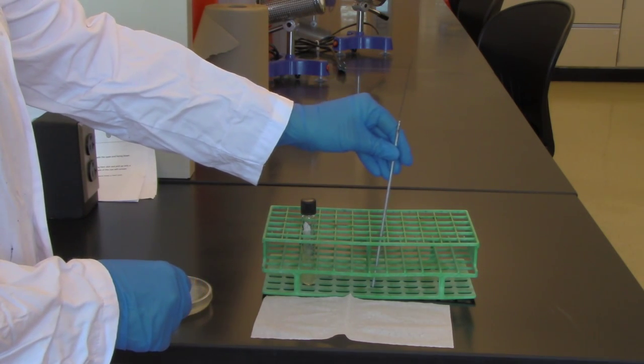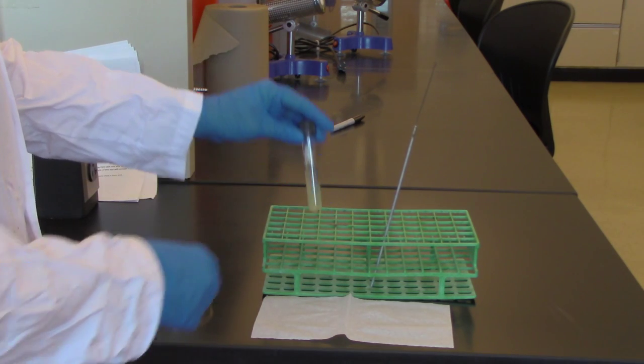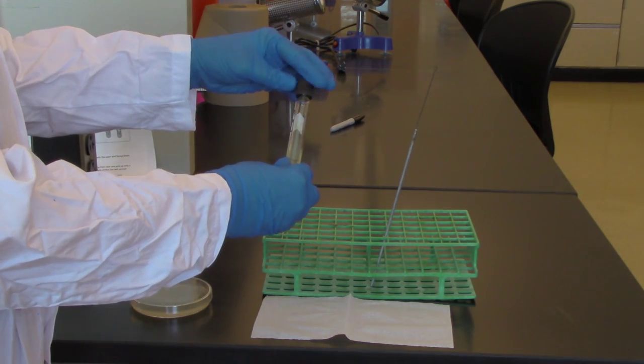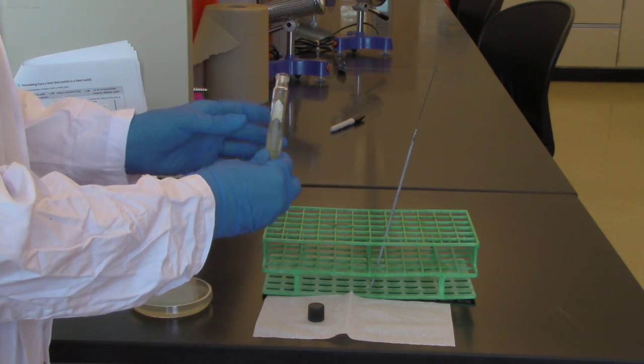I have my sterilized loop. I'm going to set it aside here for a moment. I'm going to pick up my slant, remove the lid, put the lid face down on a clean kim wipe, and hold onto the tube.